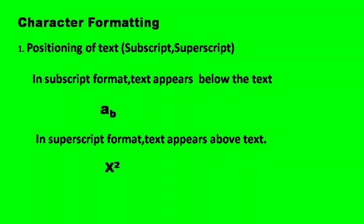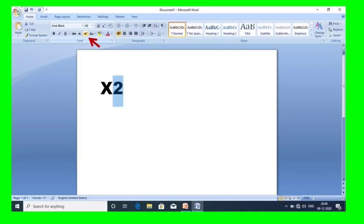For example, suppose we want to superscript the number two — we just select the number and then click the font tab and select the X-squared icon, that is the superscript icon. We just select it and the number displays in superscript form. In the same way we can use subscript also.